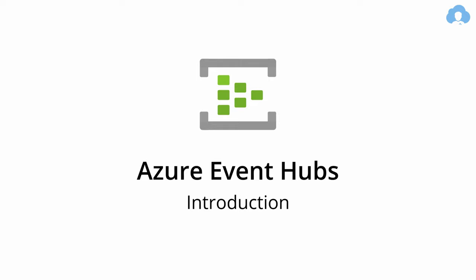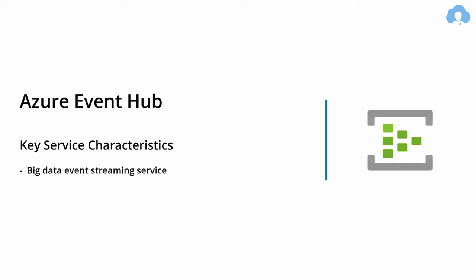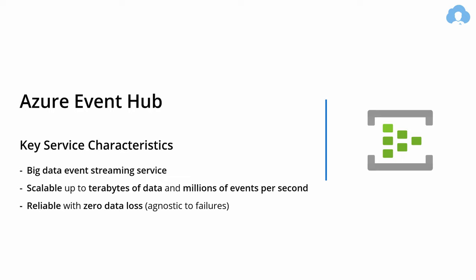I want to start with key characteristics when it comes to Event Hubs. First of all, this is a big data event streaming service. Streaming is a process where you're continuously sending data to your service. Second of all, it's scalable — both in size of the data that it can process, going up to terabytes of data, and also in velocity, which is millions of events per second. Third, it's reliable, so there's no data loss because it is designed to be agnostic to failures.